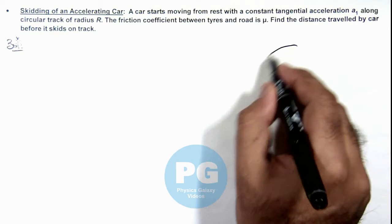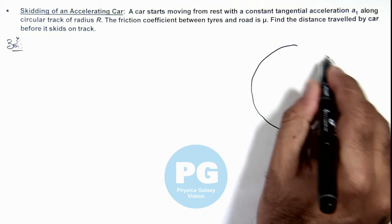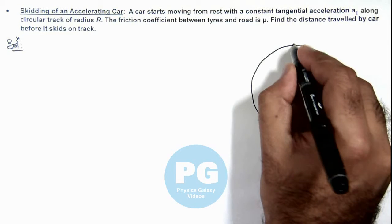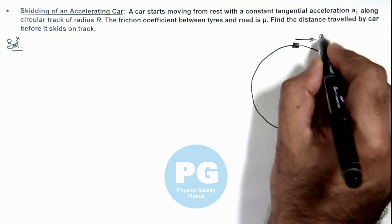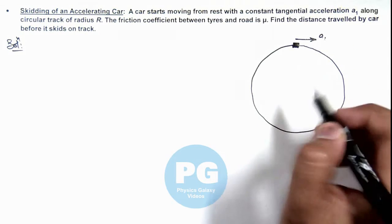Here if I draw the track, a circular track on which a car is moving, say if this is the car, it is having a tangential acceleration a_t due to which the speed of car continuously increases.